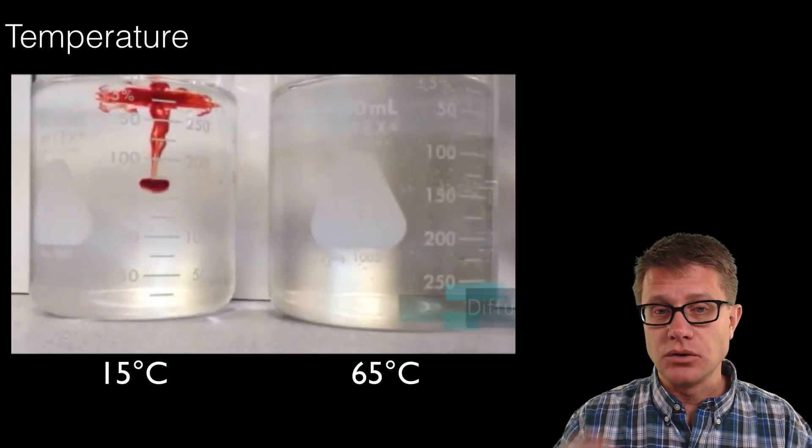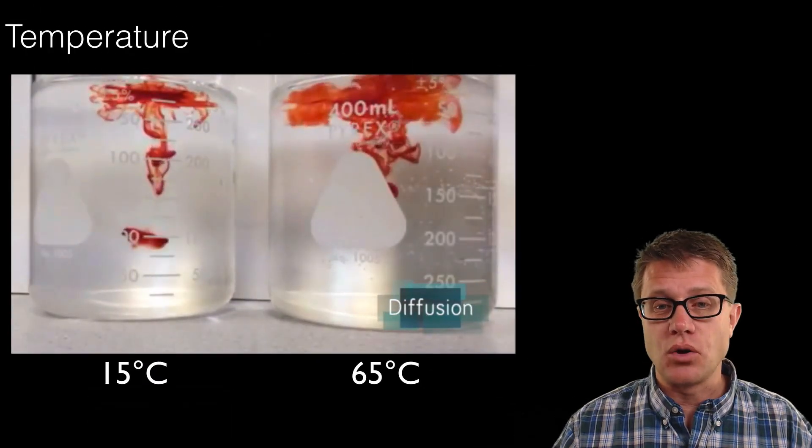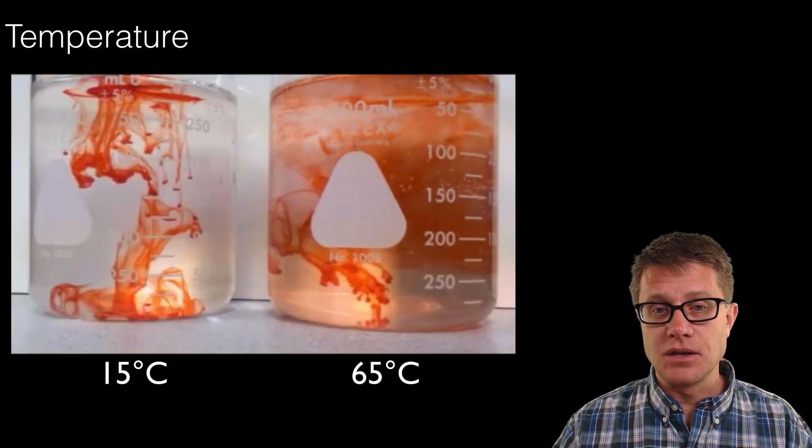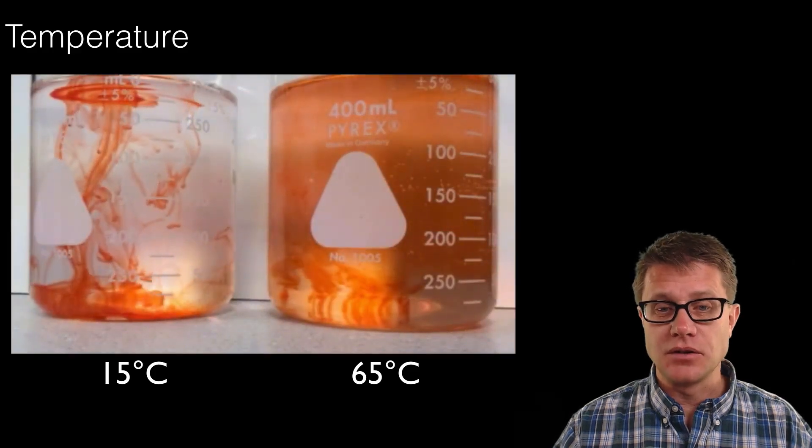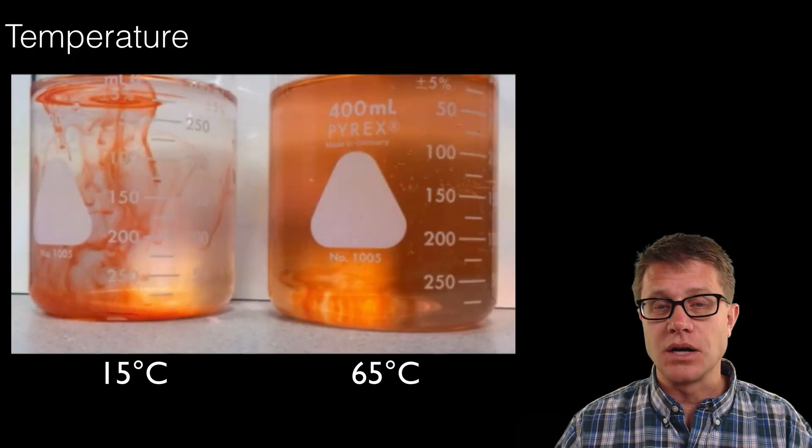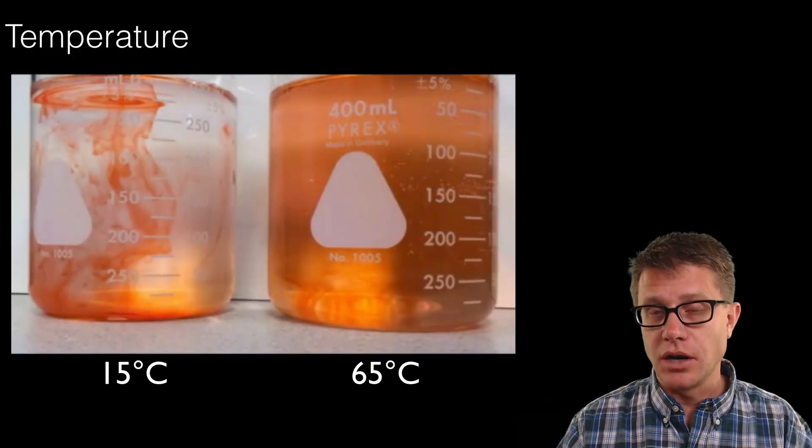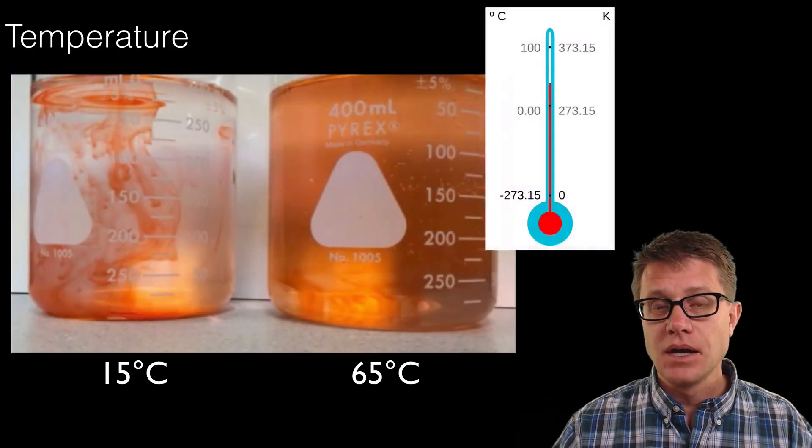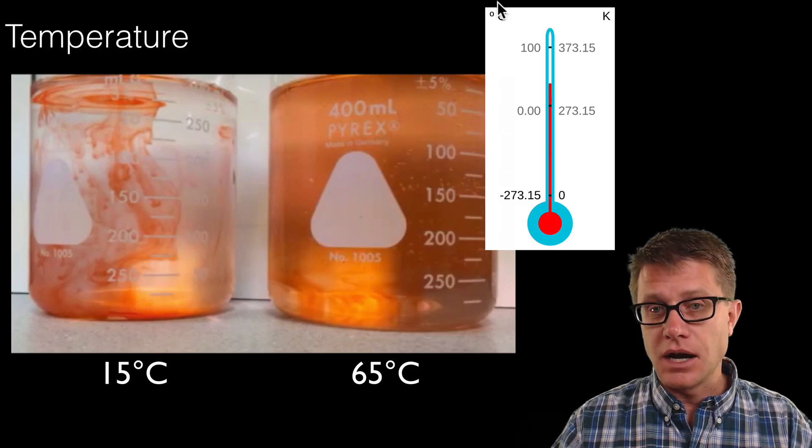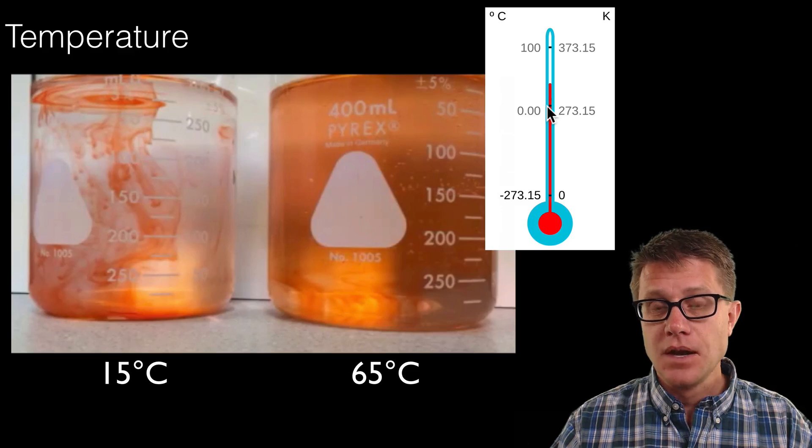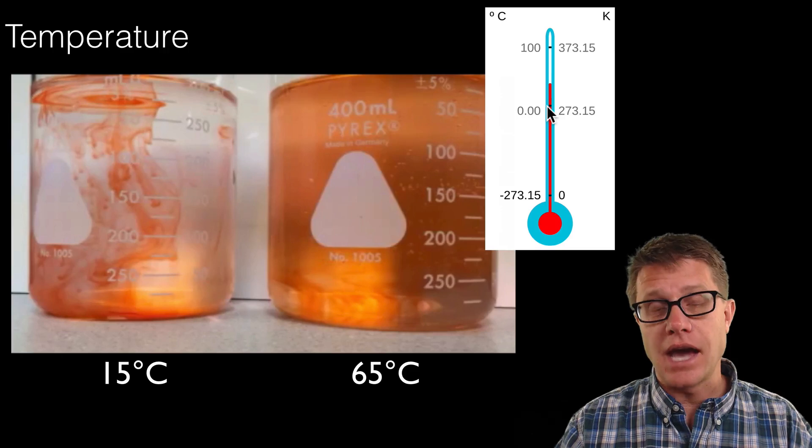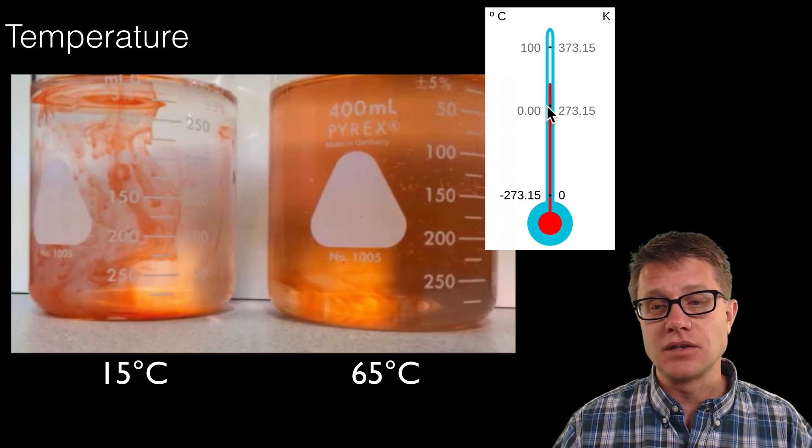And so temperature is going to be molecules bouncing around. On the left I have got some cold water, on the right I have got some warm or hot water. I put some dye in it so you can see the molecules interacting with the dye. I have done some time lapse here so you can see it moving around. So you can see on the right side there is more molecular motion. More of those molecules are moving around so we get greater distribution of the dye. And so we use a thermometer to measure how fast those molecules are going.